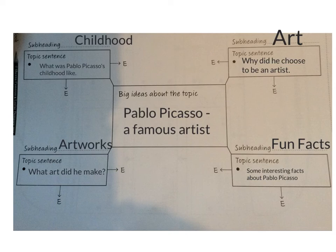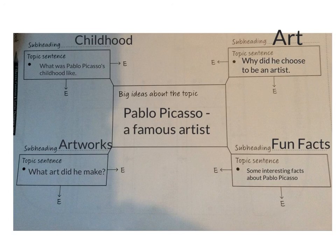So today, you're going to use a plan like this, and you're going to have to think about what your four main ideas are going to be that you're going to find out about Pablo Picasso. You can have one similar to mine, or think of some of your own ones as well. Then you're going to research on the internet to find some examples to go with each of your topic sentences. Good luck for your research and planning today.